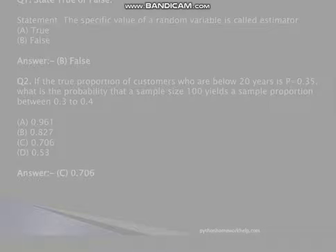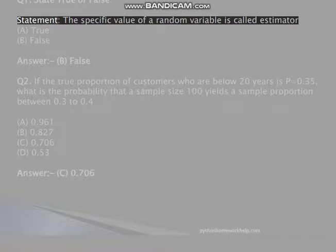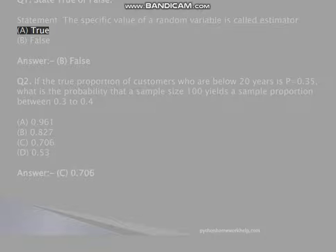Q1. State true or false. Statement: the specific value of a random variable is called estimator. A, true, B, false. Answer: B, false.